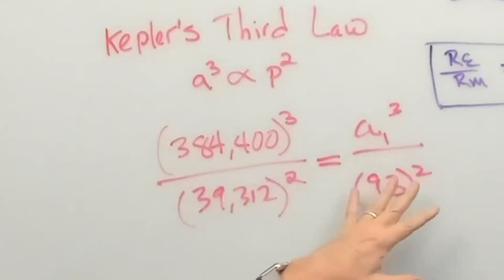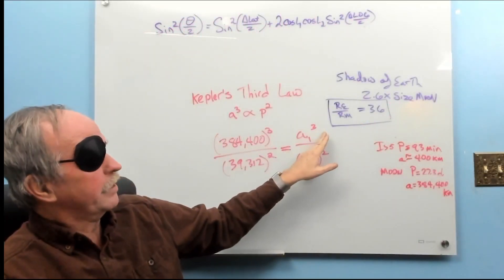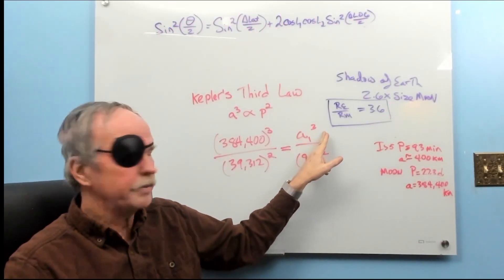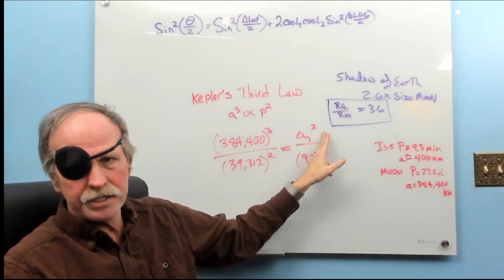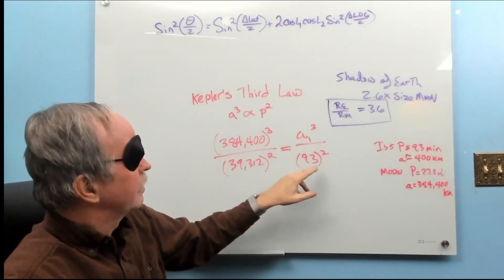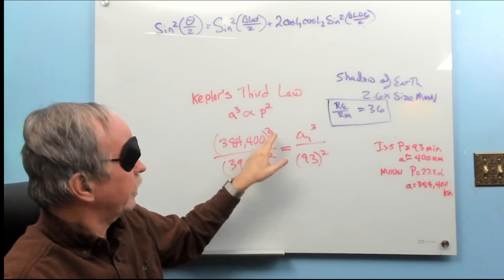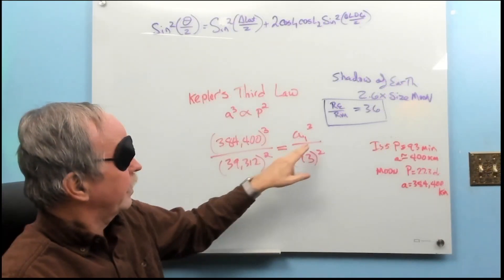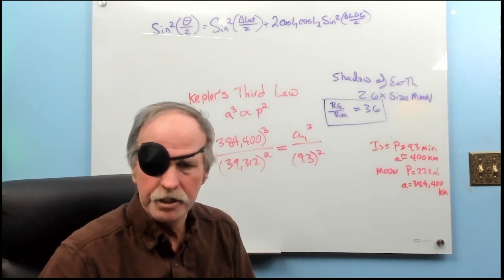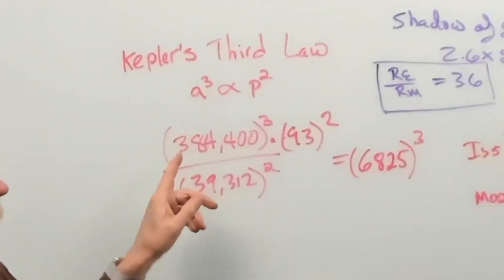Now, we know these three values. Let's see if we can find the radius of the orbit of the ISS. And remember, that's to the center of the Earth. So, we'll move this 93 up to here. And then we'll solve for that. Let's go ahead and do that real quick. So, here we go.